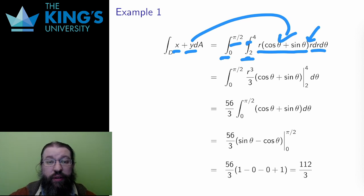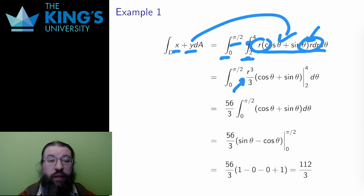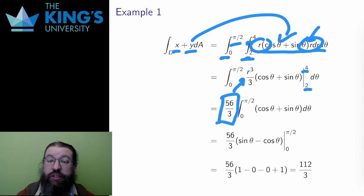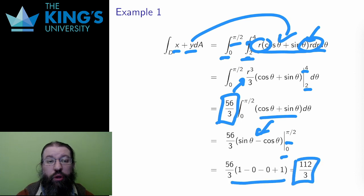Nothing else special needs to happen. Now all the ordinary rules of integration apply. I do the inside integral first. Combining r from before and after the brackets gives r squared, and the antiderivative is r cubed over 3. I evaluate on the bounds from 2 to 4, and the result is 64 minus 8 over 3, or 56 over 3. This is a constant of the theta integral, so I bring it out in front. Then I integrate the theta integral and evaluate on the bounds. The calculation produces 112 over 3. The volume under the graph of x plus y over this region D is 112 over 3 cubic units.